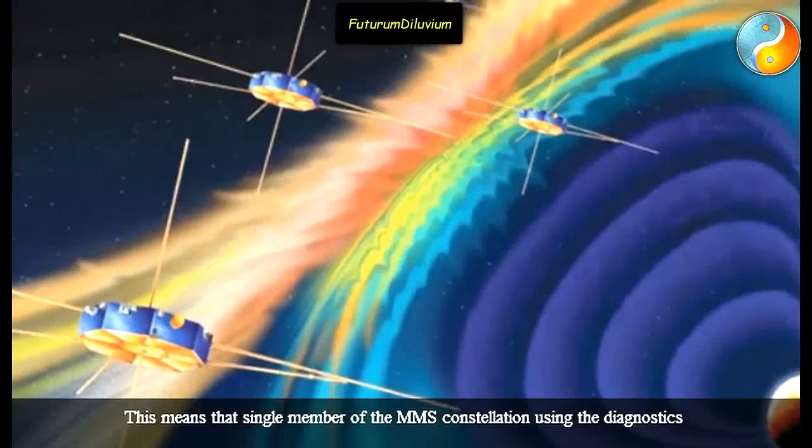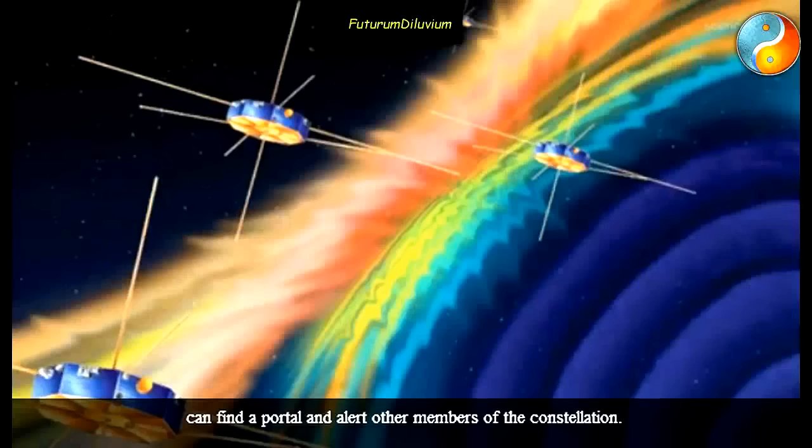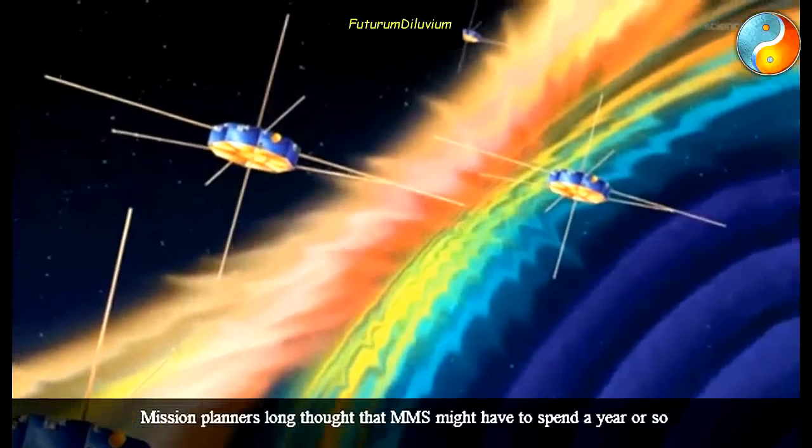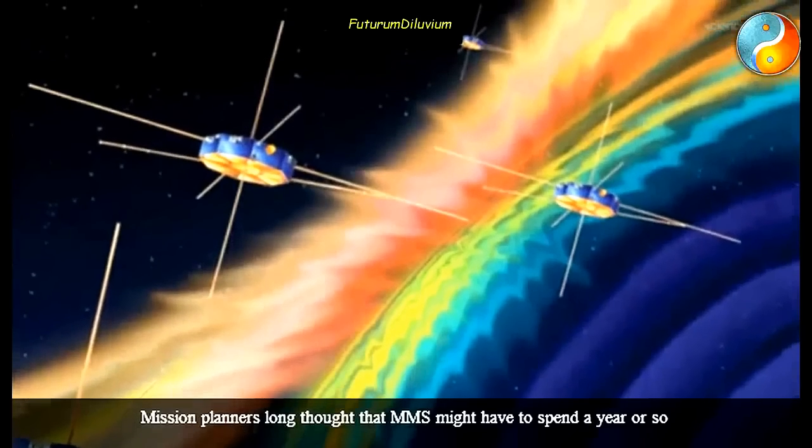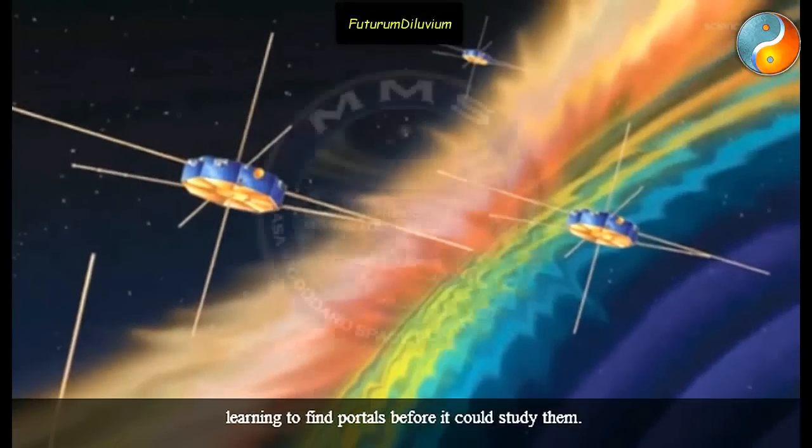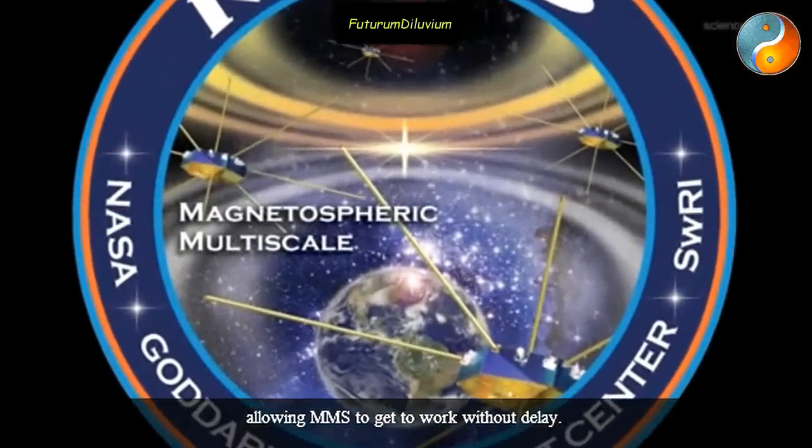This means that a single member of the MMS constellation, using the diagnostics, can find a portal and alert other members of the constellation. Mission planners long thought that MMS might have to spend a year or so learning to find portals before it could study them. Scudder's work shortcuts the process, allowing MMS to get to work without delay.